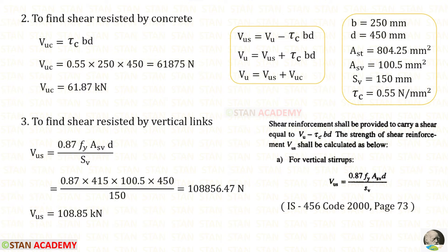Now, let us find VUS, which is the shear resisted by the vertical links, which are the stirrups. Using this formula, we can find that. We know all of the values, we can apply them. So that we will get this. We can divide this by 1000 so that we will get the value in kN.